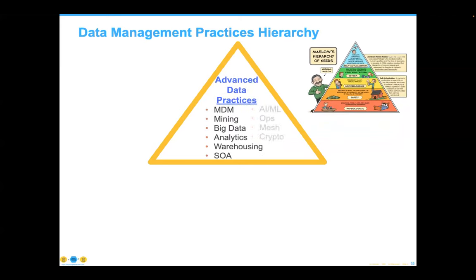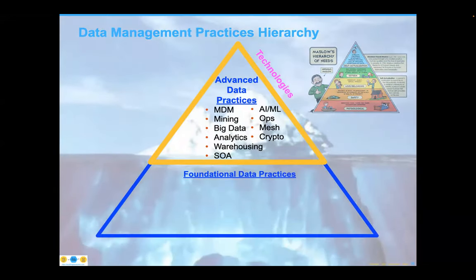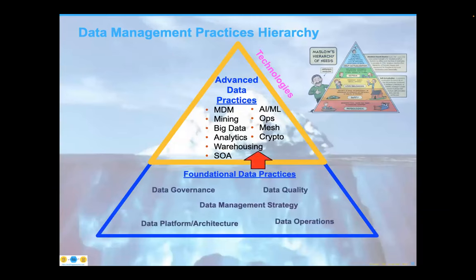We have a wonderful set of technologies in this golden triangle of advanced data management practices — things like data mesh, crypto, AI and ML. But these are just technologies; they're the tip of the iceberg when it comes to understanding data. The foundational data practices — the five things I've mentioned — are organizational capabilities. Those capabilities must be present and practiced at a high level of maturity in order to make anything at the top work at all.